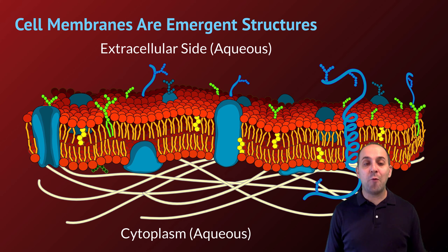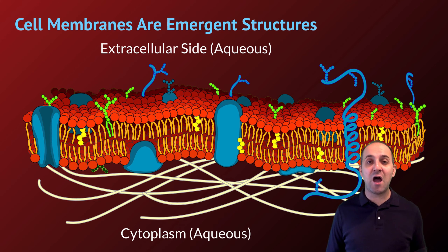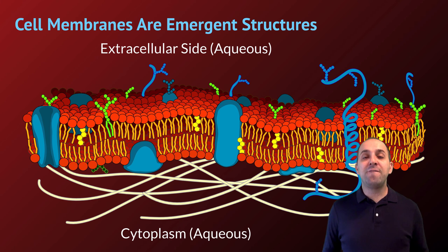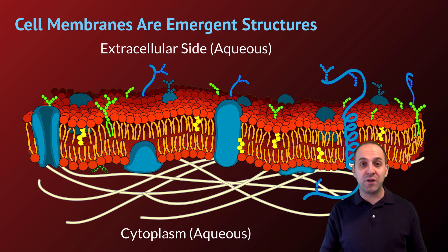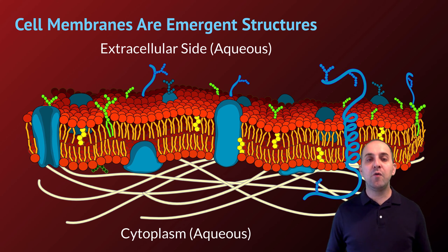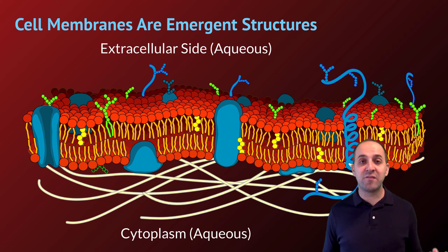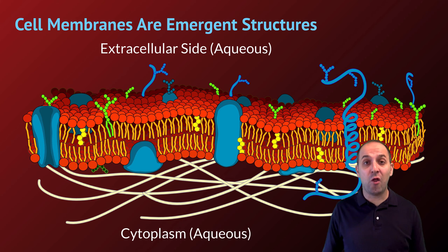It's important to understand that cell membranes are another example of the phenomenon of emergence that we see in biological systems. The functions of the cell membrane emerge from the combination of all the different elements of the cell membrane put together and functioning together as an integrated whole. If we removed any one type of these structures from the cell membrane, the cell membrane would not function anymore and the cell would die as a result.